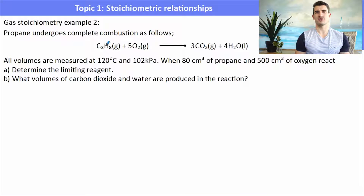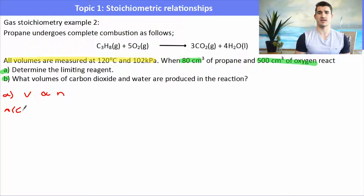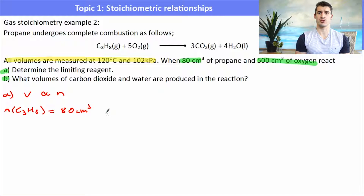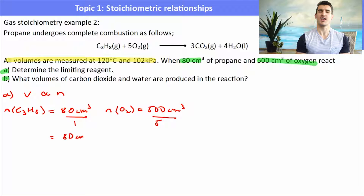Third example: propane undergoes complete combustion — the equation is given. All volumes are measured at 120°C and 102 kPa. When 80 cm³ of propane and 500 cm³ of oxygen react, since all volumes are at the same temperature and pressure, volume is proportional to moles — we don't need PV = nRT. Dividing by stoichiometric coefficients shows propane is the limiting reagent; it will run out first.